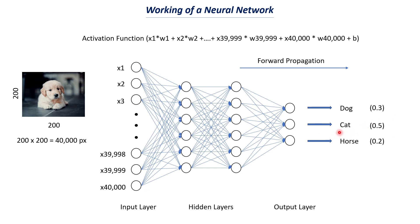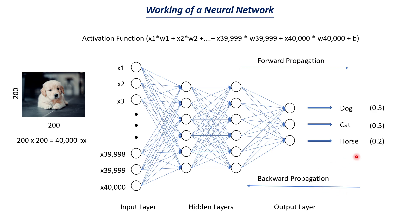We can see this is a wrong prediction. Since this is a supervised learning approach, we also feed the labels of the images. The label says the image is a dog, but the model predicted cat with probability 0.5. The model compares its output with the true label and recognizes the wrong prediction. This information is then propagated in the backward direction — this is what we call backward propagation. Based on the correctness of the prediction, the weights and bias across all neurons in all layers are adjusted.